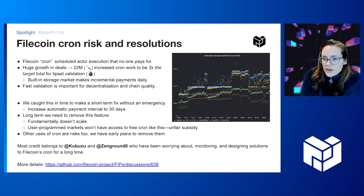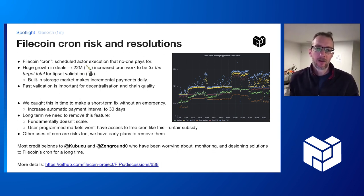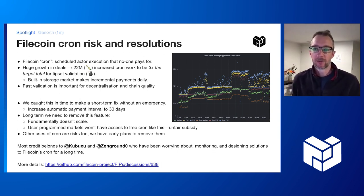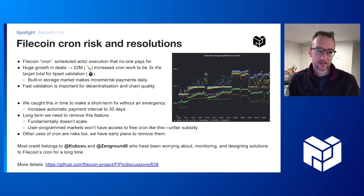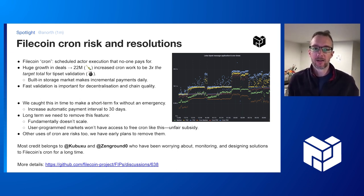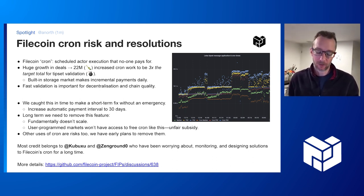Over to Alex for Filecoin cron risks and resolutions. The Filecoin network has something called cron — a scheduled execution of actor code at the end of every epoch, done on behalf of the system so no external party pays for it. This does important system maintenance tasks, but we started seeing so much work happening in cron that it ended up being three times the entire target total for an epoch's validation, happening in this unpaid bonus execution time.